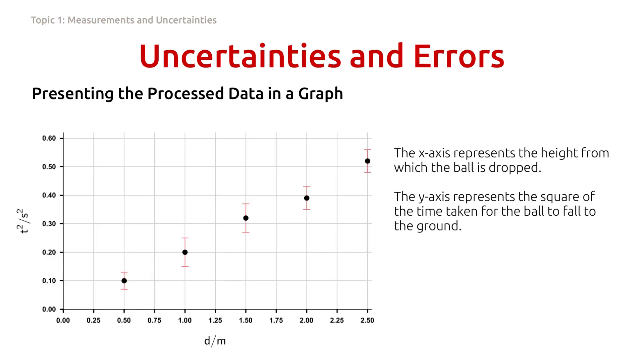And here's the graph. The x-axis here represents the height from which the ball is dropped, and this is measured in meters. The y-axis represents the square of the time taken for the ball to fall to the ground. Notice here that each point is plotted with an error bar, because they are all subject to uncertainty.